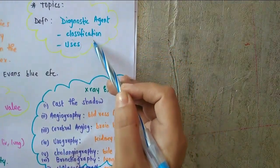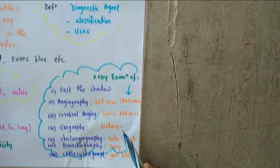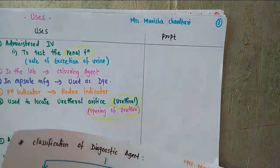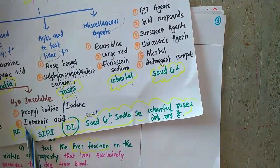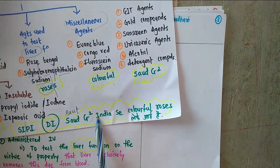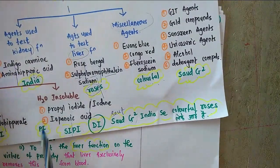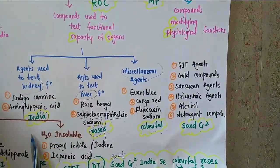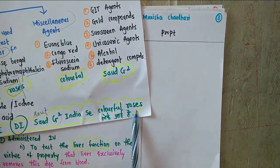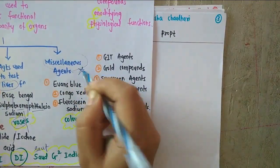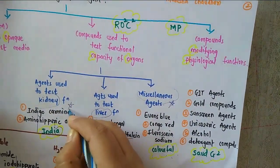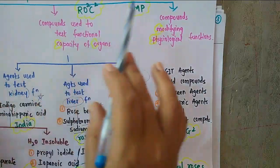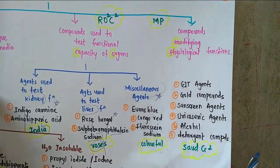So how the classification key members are used in these techniques we will see one by one. To review: Madhya Pradesh rocks — saudji is for MP, India is for kidney function test — indigo carmine and amino hippuric acid. Colorful is for miscellaneous agents. We are going to see the uses of indigo carmine, then rose bengal.